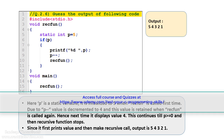At that point the recursive function stops. This program prints the value of p first at line number 8 and then makes the call to the recursive function. So the output is 5, 4, 3, 2, 1.